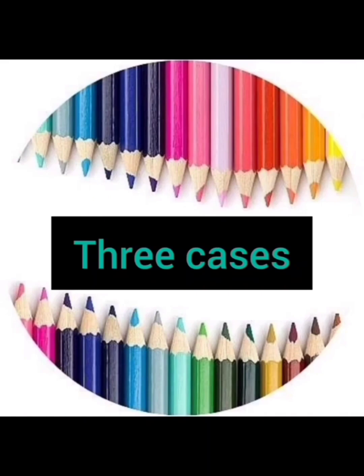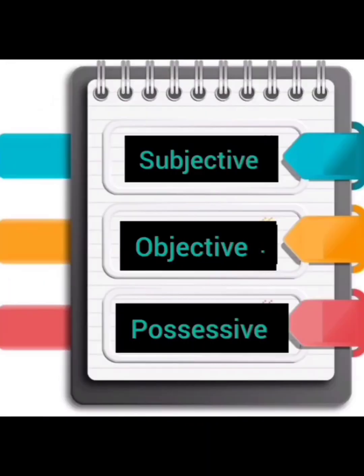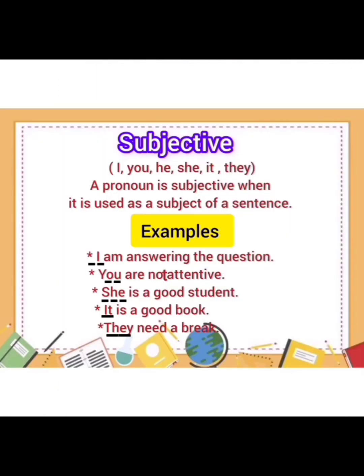Further we have three cases of pronouns: the subjective case, objective case, and possessive case. Subjective case pronouns are: I, you, he, she, it, they. A pronoun is subjective when it is used as the subject of a sentence. For example: 'I am answering the question.' 'You are not attentive.' 'She is a good student.' 'It is a good book.' 'They need a break.' All these pronouns are used in the place of subject.